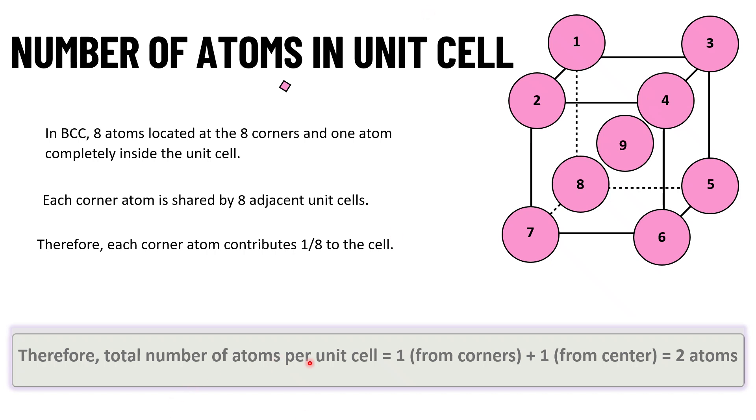Related to the corner atoms we are having one atom in whole and there is one atom completely inside the body. Total number of atoms per unit cell is equal to 1 from all the corners plus 1 which is situated at the center. We can say number of atoms in unit cell in case of BCC structure is 2. There are 2 atoms which are contributed in the given BCC structure.